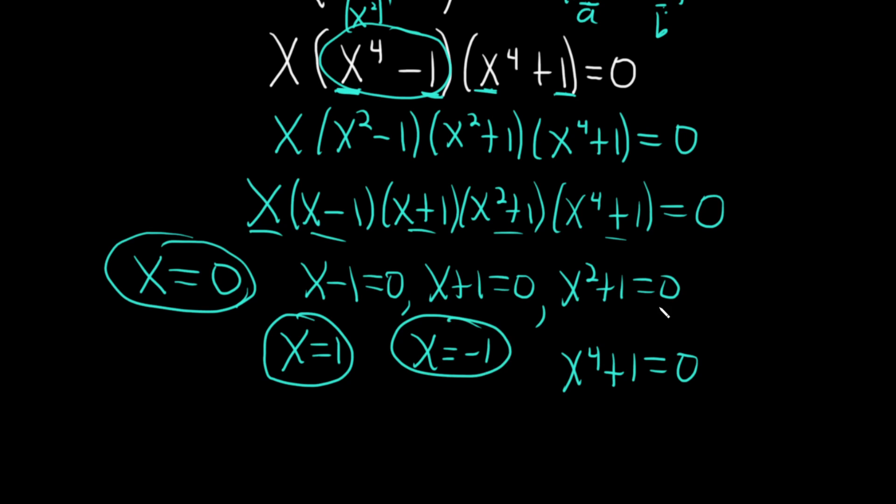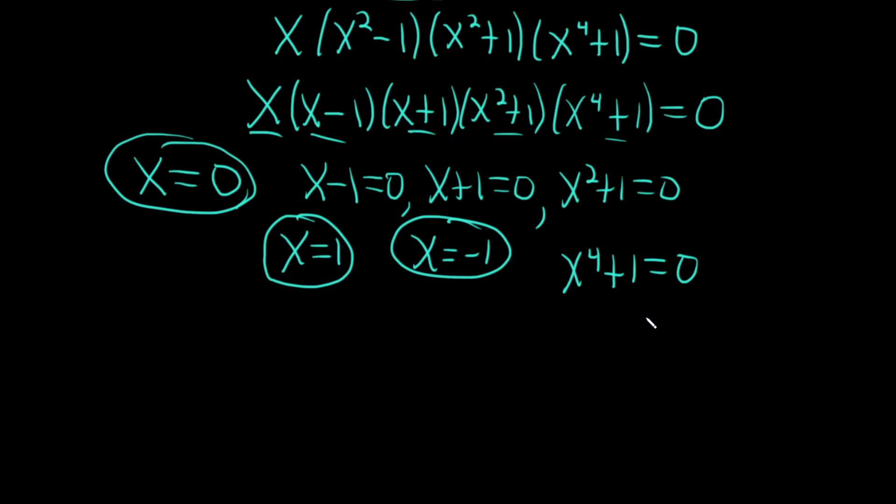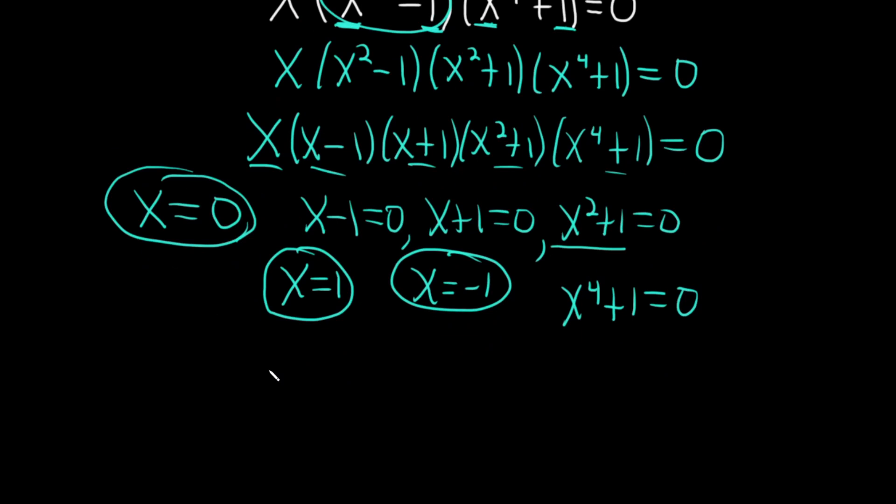And then here, you're not going to get real solutions, so we don't want them. To see why, let's just take the first one and subtract one. That would give us x squared equals negative one. And when you take the square root of that, you're going to get a plus or minus i. And that's not something we want in this problem. We only want real solutions. The same thing will happen here whenever you have x to the fourth equals negative one. In general, whenever you have an even power like this equal to a negative number, you're always going to get some complex solutions. So we only want real ones, and these are the only ones that work. So the final answer is zero, one, and negative one.